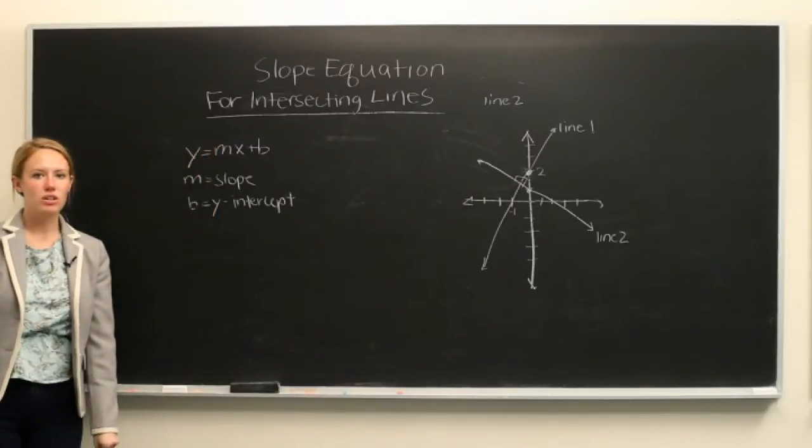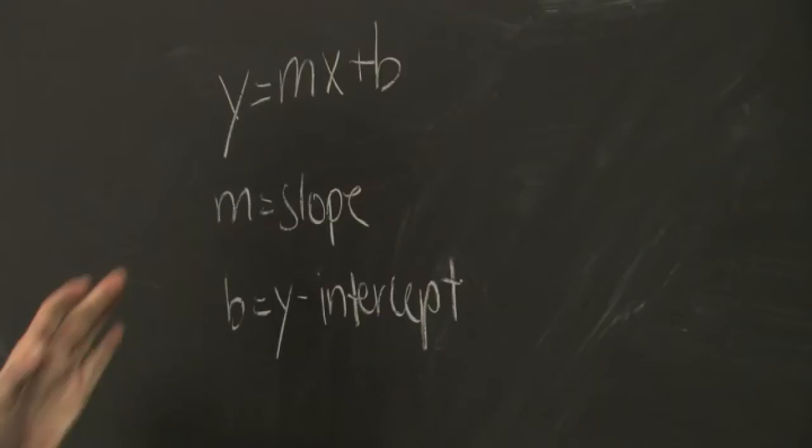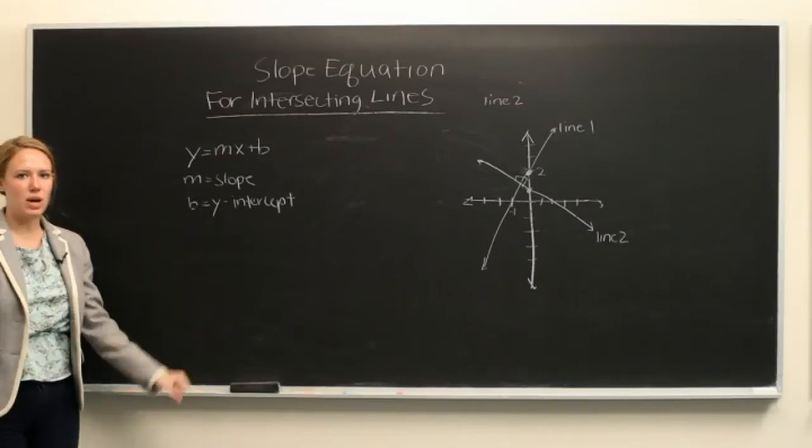Here we have an equation called the slope intercept form, y equals mx plus b, where m is the slope and b is the y-intercept.